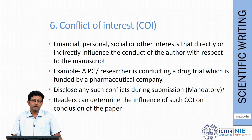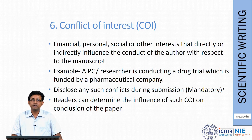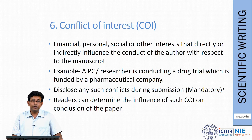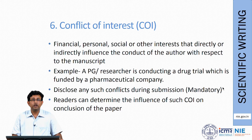The last component is conflict of interest, defined as financial, personal, social, and other interests that directly or indirectly influence the conduct of the author with respect to the manuscript. For example, a researcher conducting a drug trial funded by a pharmaceutical company may have their outcome influenced by that company — it is not just financial, they may also change the outcome of interest. You must disclose such conflicts of interest during submission, and the readers will decide the influence of such conflict of interest on the conclusions of the paper.